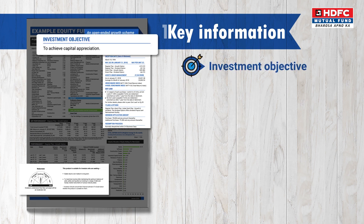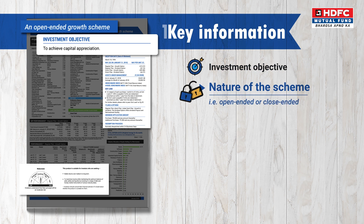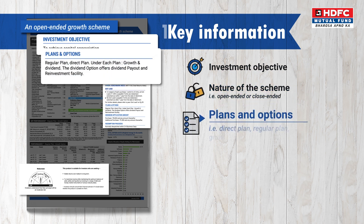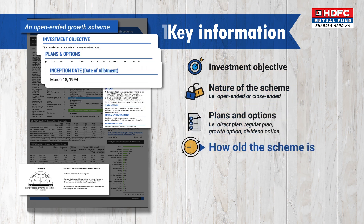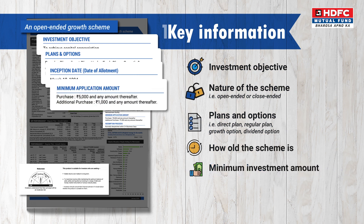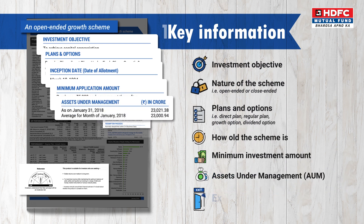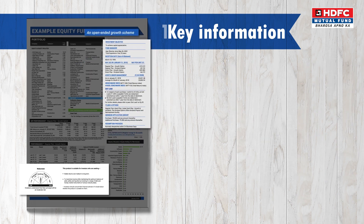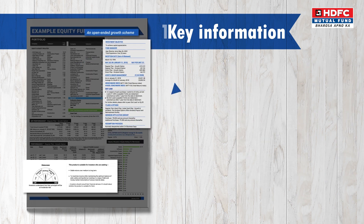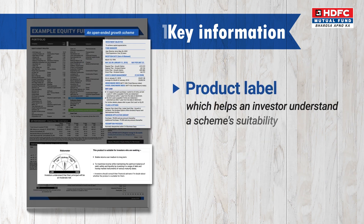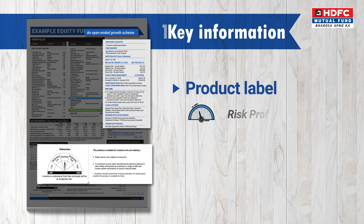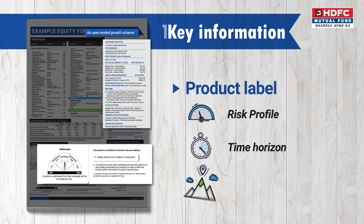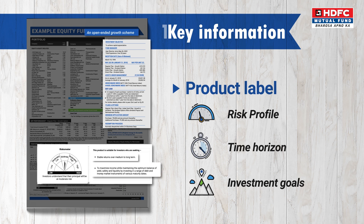Key information includes the basic details of a scheme, like its investment objective, nature of the scheme, plans and options available, how old the scheme is, minimum investment amount, assets under management, exit load, etc. The fact sheet also includes a product label which helps an investor understand a scheme's suitability for his risk profile, time horizon and investment goal.